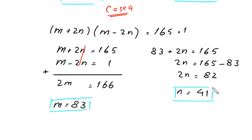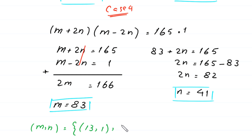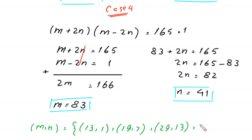The final set of solutions (m, n) are: the first pair is (13, 1), the second pair is (19, 7), the third pair is (29, 13), and the fourth pair is (83, 41).